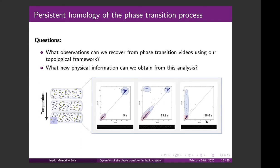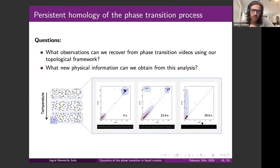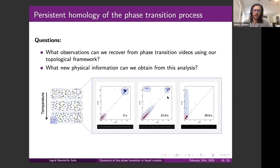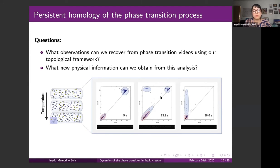A follow-up question asks whether Vietoris-Rips or another complex is being used. The speaker explains that they are using a filtration by pixel intensity — essentially a Morse filtration on the cubical complex of the image. However, they also performed Vietoris-Rips filtrations to measure periodicity in the system, which was also detected, though this is not presented in this talk.